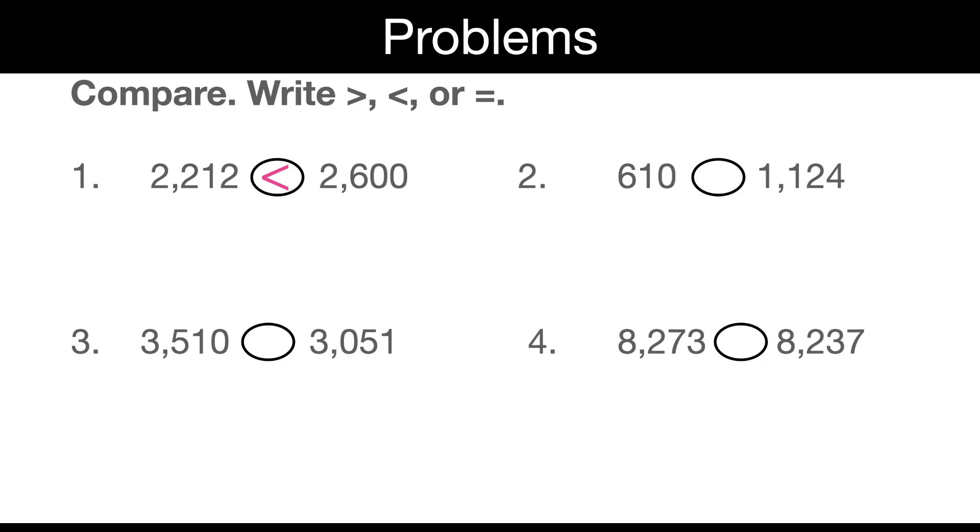Let's look at number two. Quick check. I can tell that the 610 is only three digits. So let's put in a placeholder to make them both four-digit numbers. And let's work from the left to the right. Right away, I see that zero and one are not equal. The one is greater, meaning that that whole number is greater. We'll put in our symbol. And that problem would read 610 is less than 1,124.